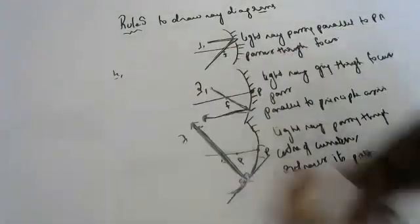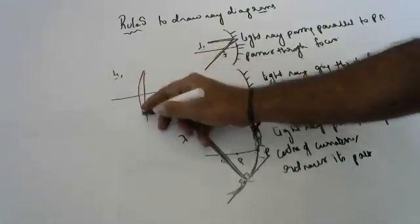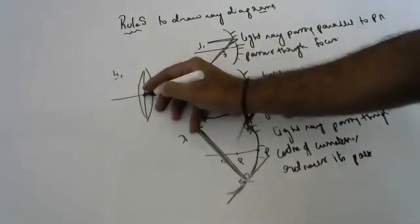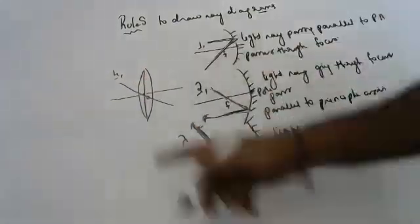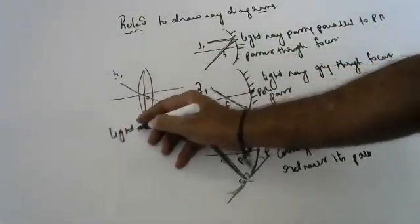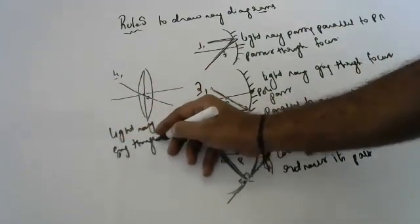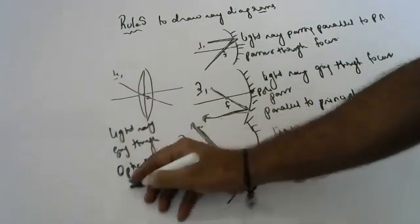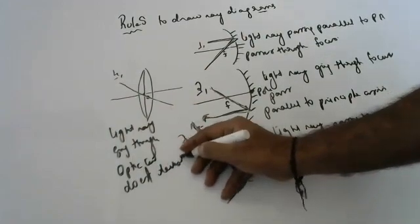Now for the lens — the equivalent of the pole is called the optic center in lenses. Light ray going through the optic center does not get deviated. Light ray going through the optic center does not get deviated.